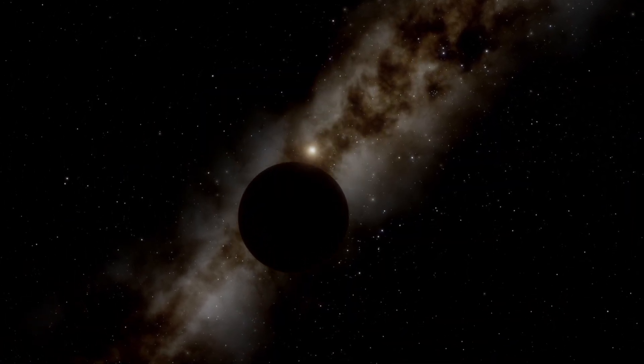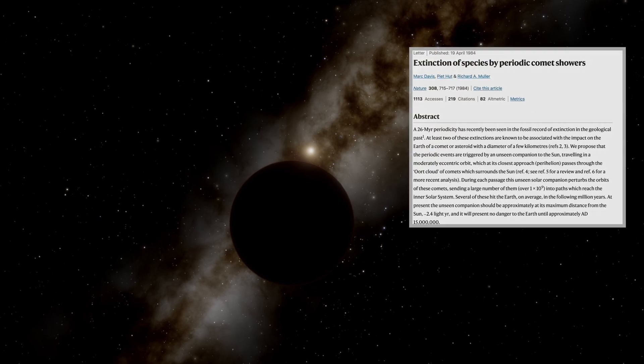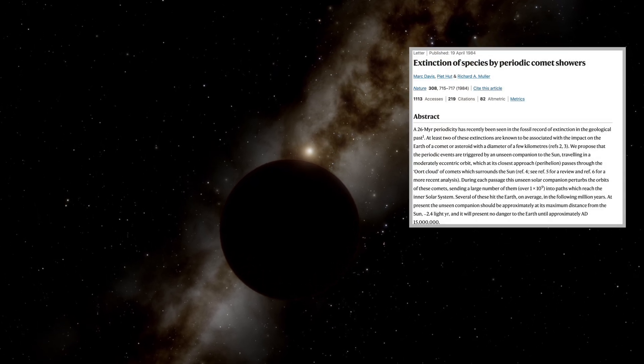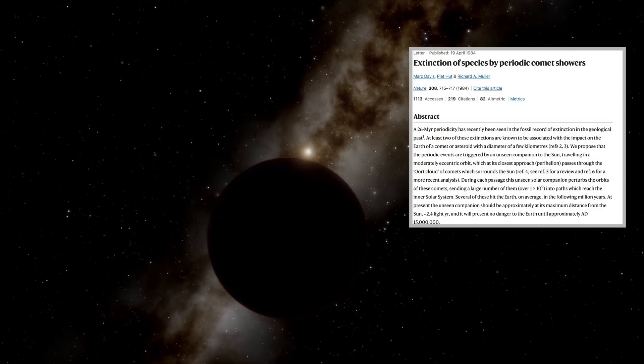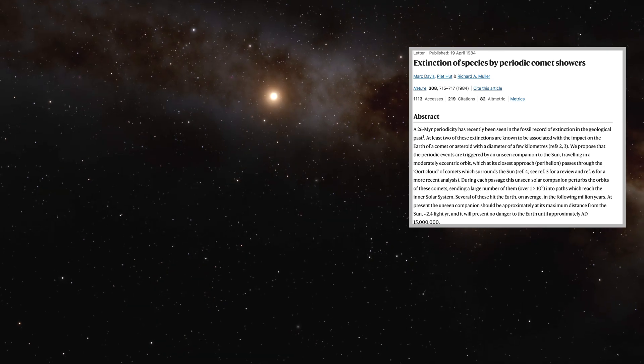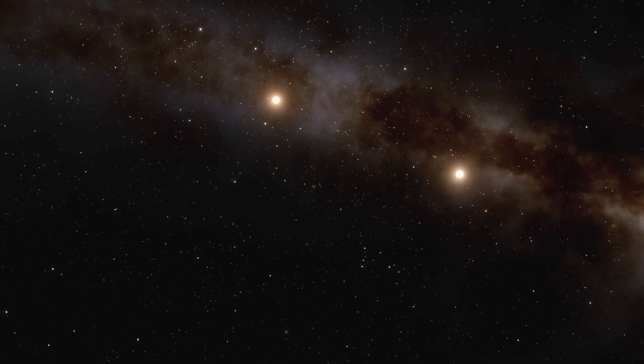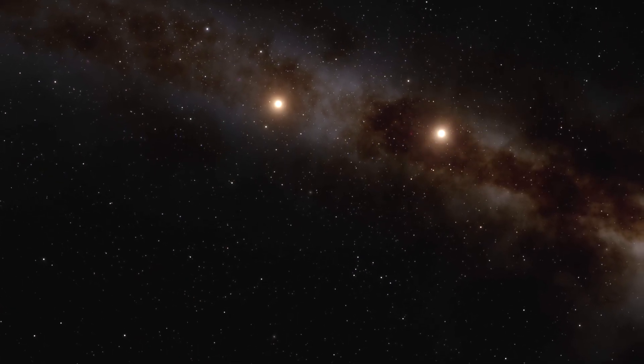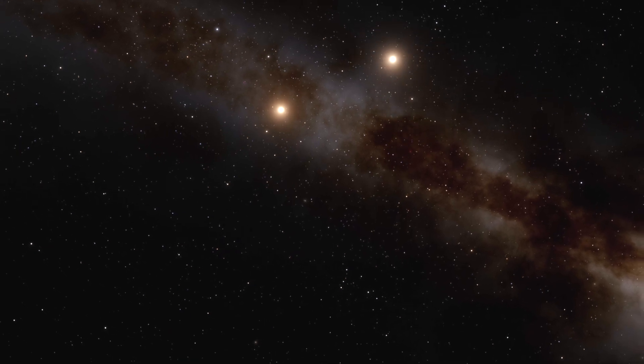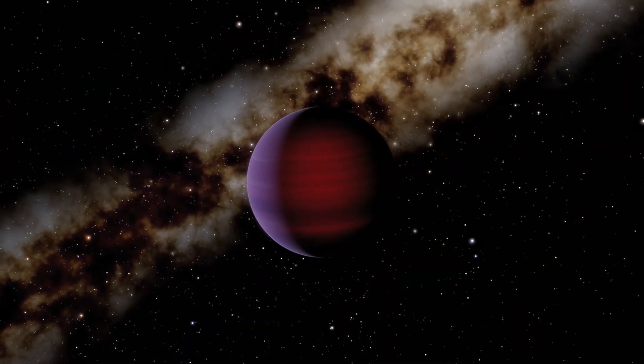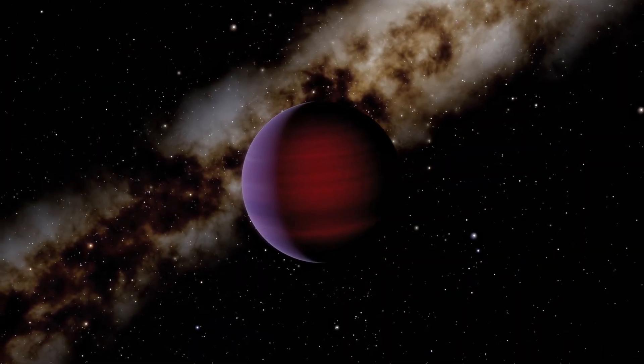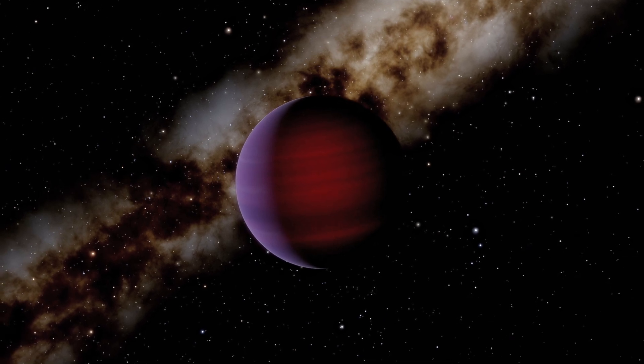In a 1984 paper titled Extinction of Species by Periodic Comet Showers, physicists Marc Davis, Piet Hut, and Richard Muller proposed that the Sun might have an unseen dim companion, perhaps a red or brown dwarf, orbiting far beyond the known planets on a long elliptical orbit.